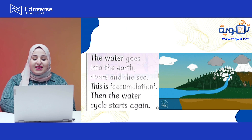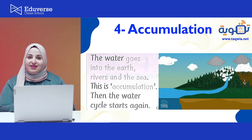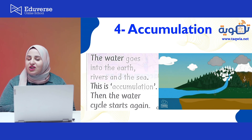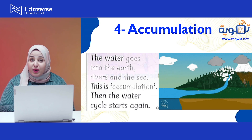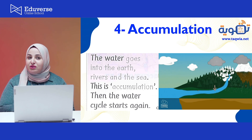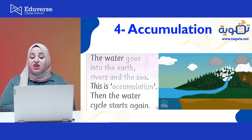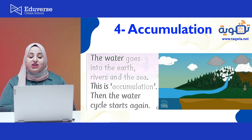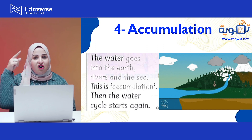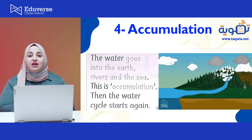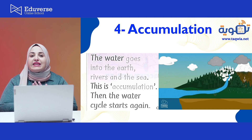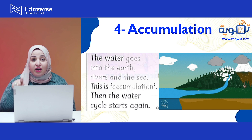The next stage is called accumulation. After we have the rain, in the accumulation stage the water goes into the earth, rivers, and the sea. Then the water cycle starts again. The water cycle is continuous all the time — it never stops. Right now as I'm talking to you, the water cycle is happening.